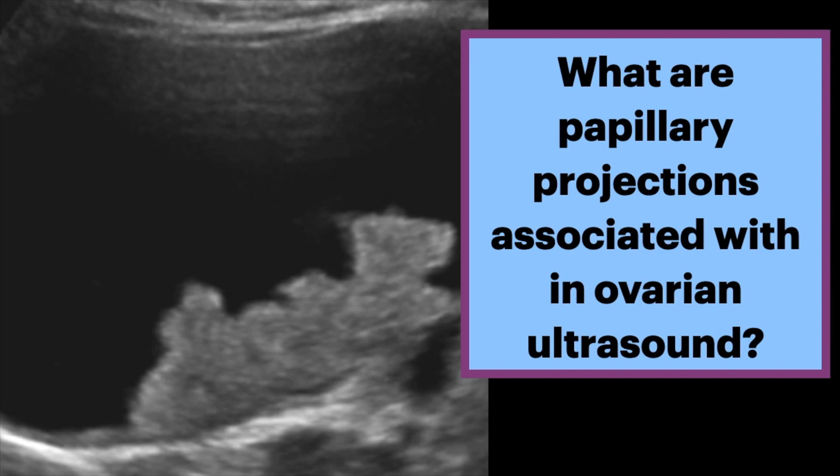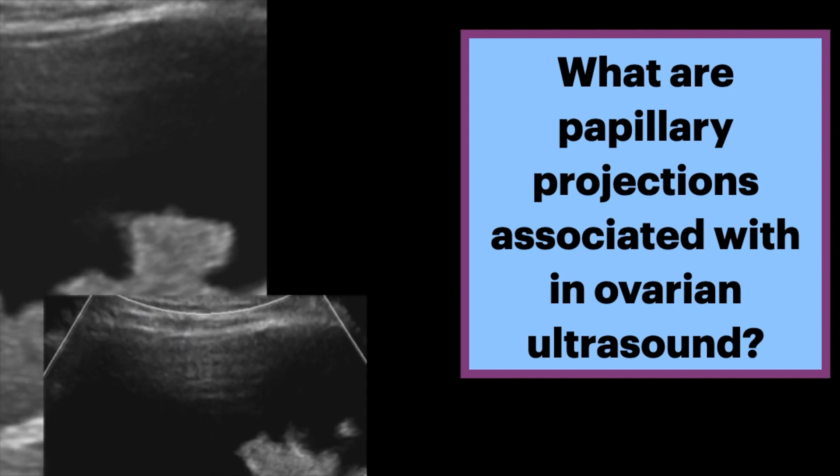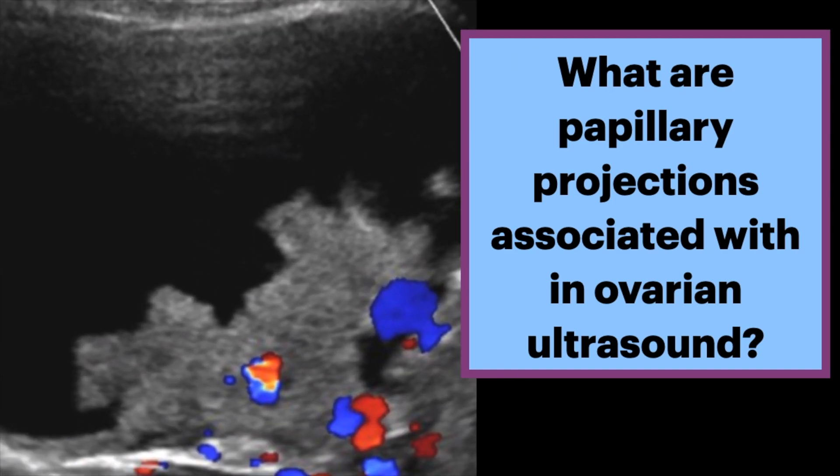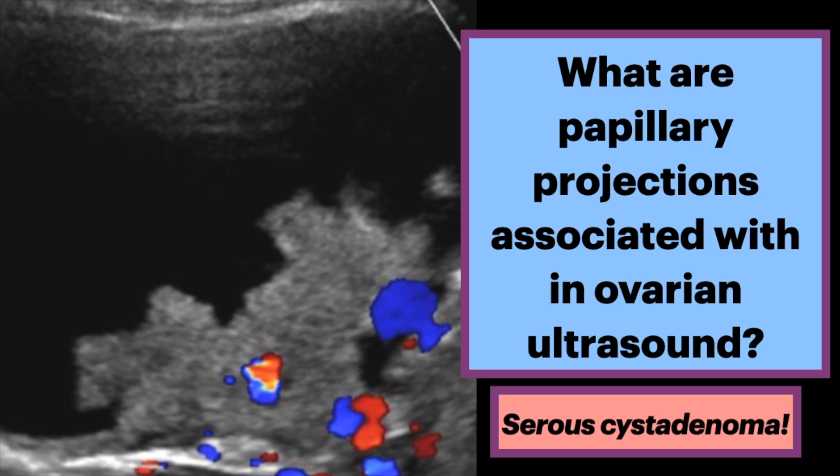What are papillary projections associated with in ovarian ultrasound? Here we see a cystic appearing structure with internal papillary frond-like projections. There is internal vascularity within these projections. The diagnosis is a serous cyst adenoma.